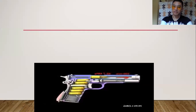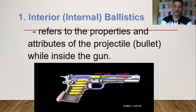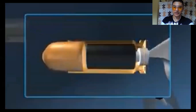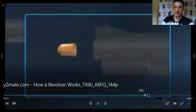The next topic is the branches of ballistics. The first branch is interior or internal ballistics. It refers to the properties and attributes of the projectile or bullet while inside the gun — any motions or behaviors of the projectile while inside the gun barrel. This is an example of the movement or behavior of the projectile while inside the gun barrel. While still inside the gun barrel, it is called internal or interior ballistics.